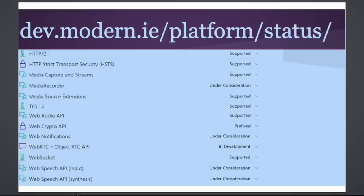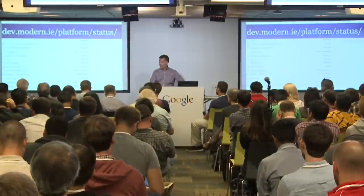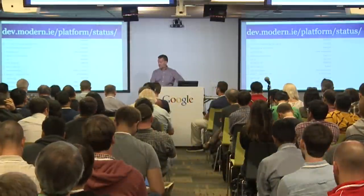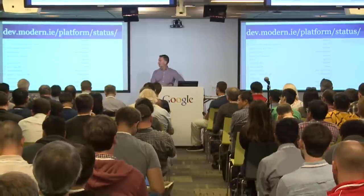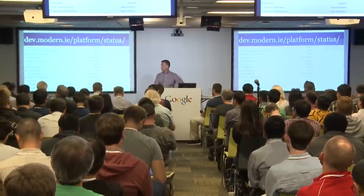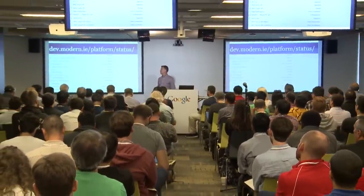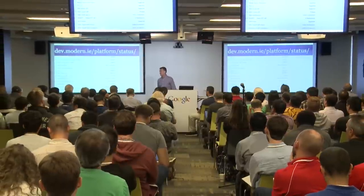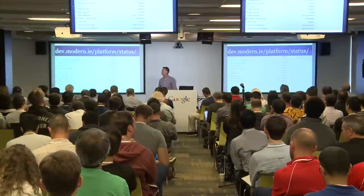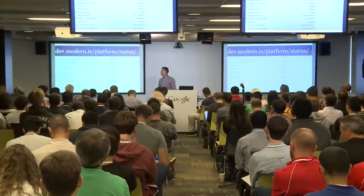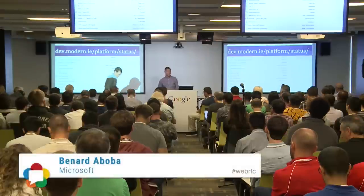Let me talk about what's in ORTC and what you should expect. Back in October 2014, we had a blog entry on dev.modern.ie that talked about the features we committed to, and we've gotten most of that work done, particularly on the audio side. In that blog, we talked about supporting G711, G722, and Opus, and we have all of those codecs checked in. We also covered other basic audio things in the WebRTC audio requirements, like comfort noise and DTMF, and those are there as well.